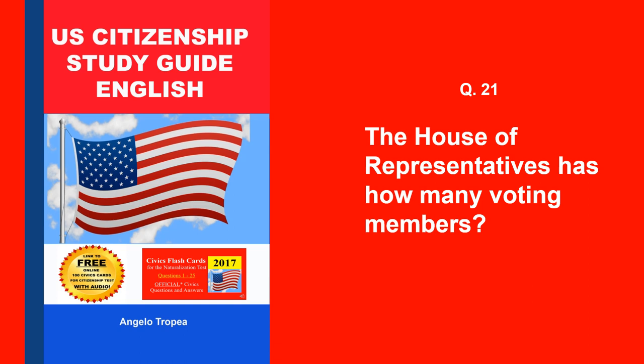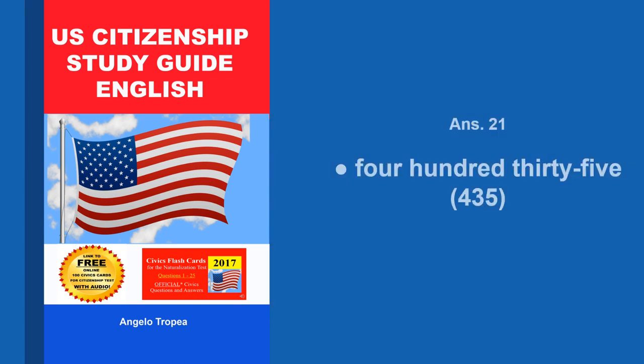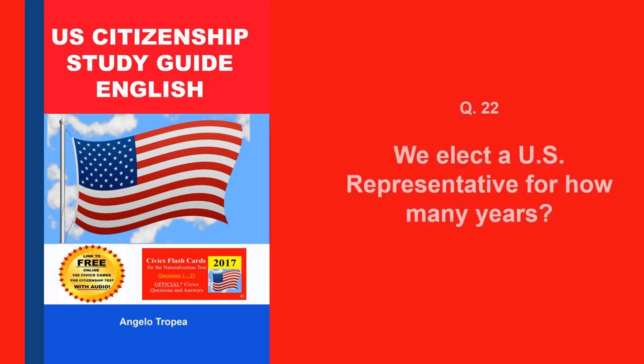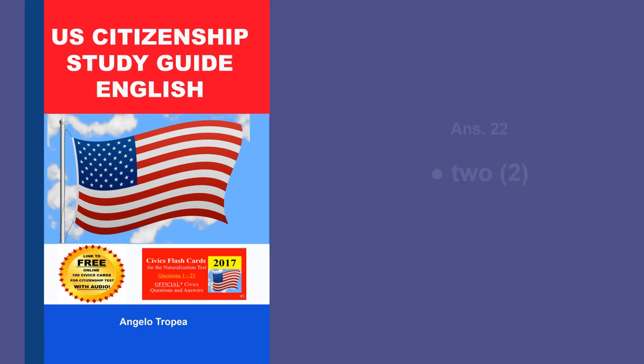The House of Representatives has how many voting members? Four hundred thirty-five. We elect a U.S. Representative for how many years? Two.